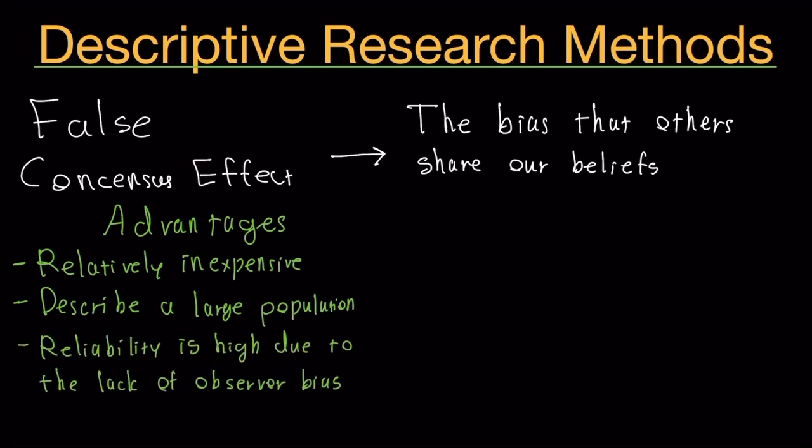There is general high reliability due to the lack of observer bias. The problem we had with the case study was that the observer can have a bias and make mistakes, but with a survey that's not really the case. All you're looking at is just answers to the questions that were asked.